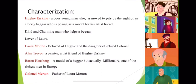The second character is Laura Merton, the beloved of Hughie and daughter of a retired doctor. Another character is Alan Trevor, a painter and artist friend of Hughie Erskine. An important character is Baron Hausberg — a model of a beggar but actually a millionaire, one of the richest men in Europe. The last character, a minor but important one, is Colonel Merton, the father of Laura Merton. These are the characters in this short story, The Model Millionaire.